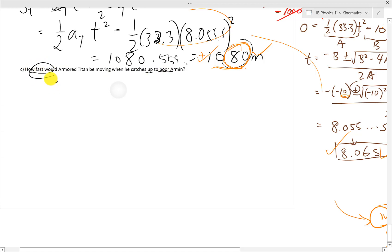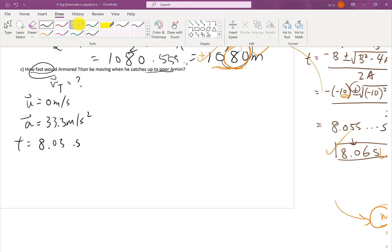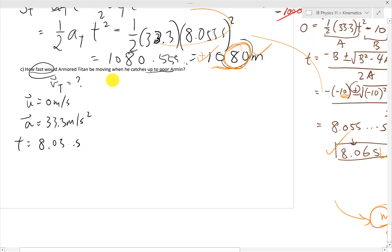How fast would the Armored Titan be moving when he catches up to poor Armin? So this, how fast, is telling us we want to find the Titan's final velocity. So we know a lot of things already, in fact. We know his initial velocity, we know his acceleration, we know the time it took him, which is 8.05 seconds, not rounded up. We can use this following kinematics equation to help us solve, which is V equals U plus AT.